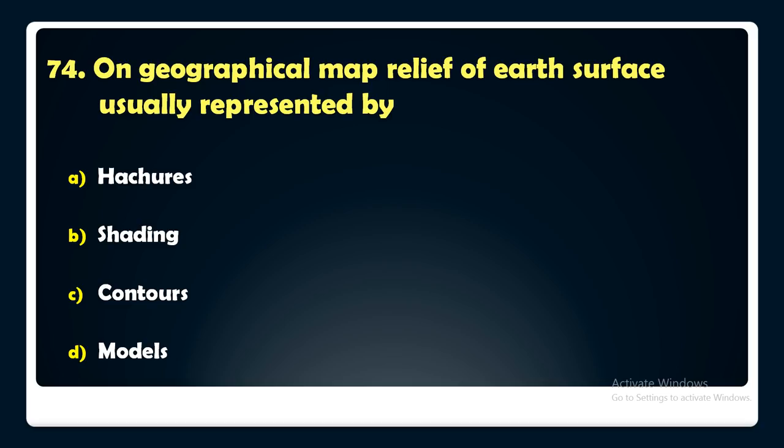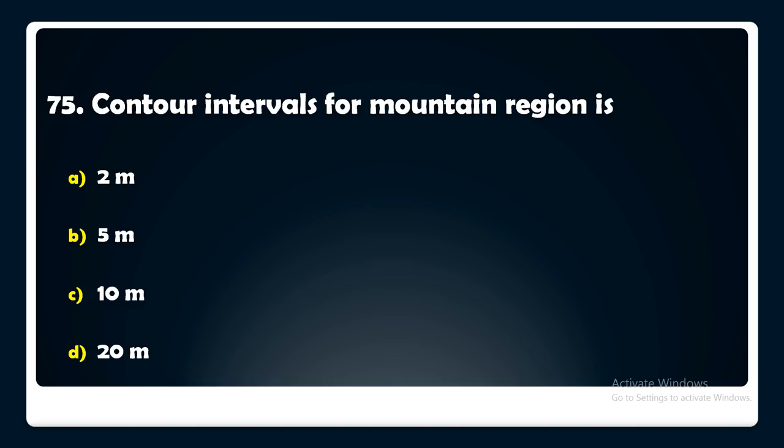A contour interval for a mountain region is — 2 meters, 5 meters, 10 meters, or 20 meters? The answer is: a contour interval for a mountain region is 2 meters.